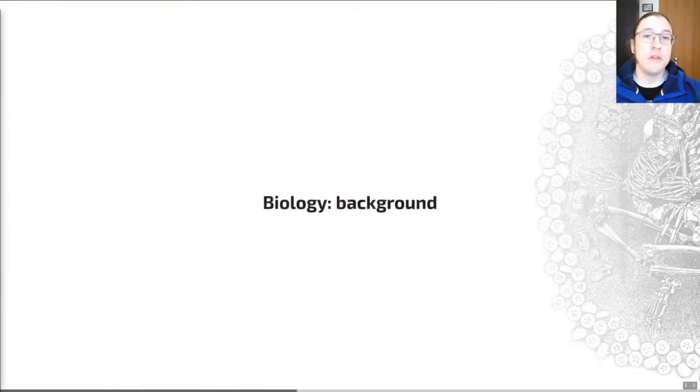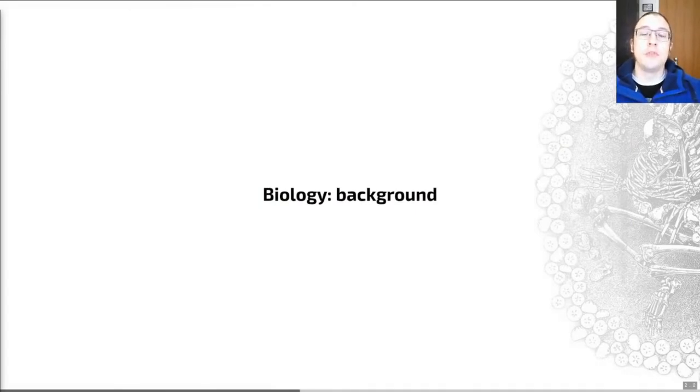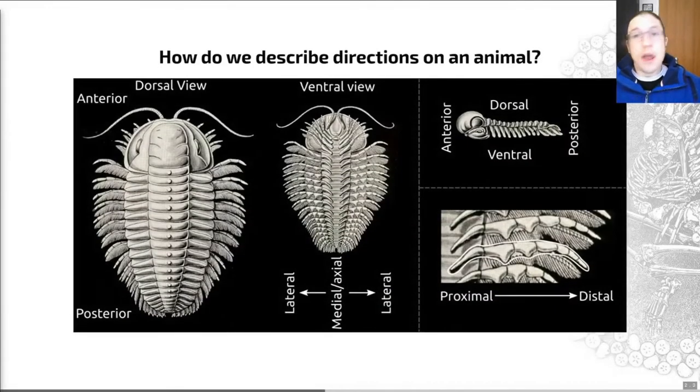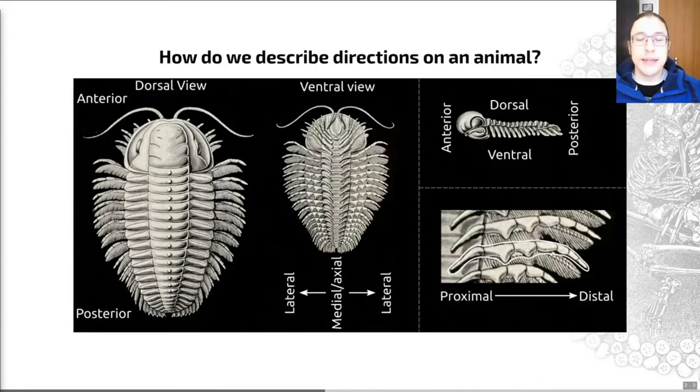So without further ado, let's look at some background biology and start off by talking about how we can identify and communicate different parts of an animal. Here is an animal. This is a member of an extinct group called the trilobites. We're going to be learning about them in the next video, the next lecture.